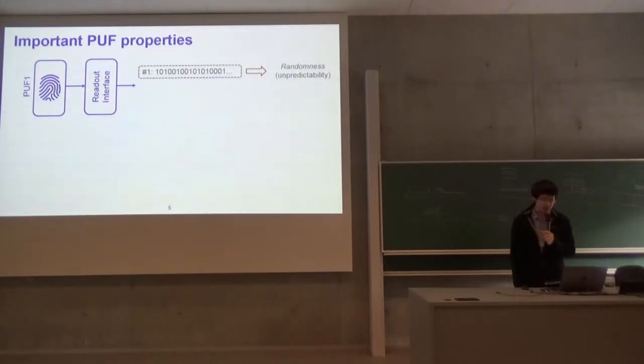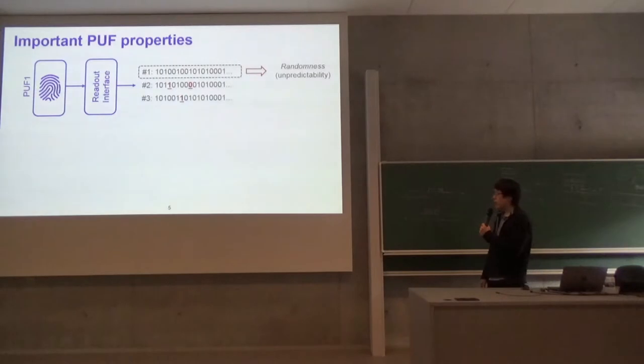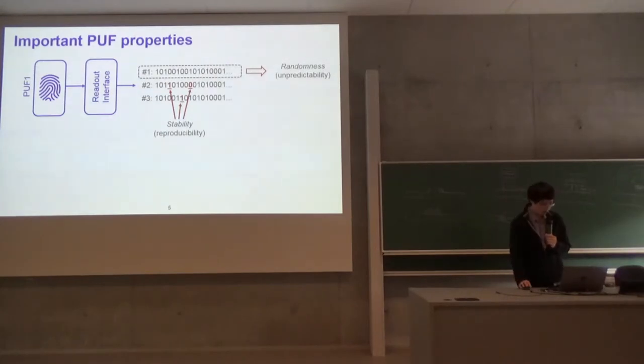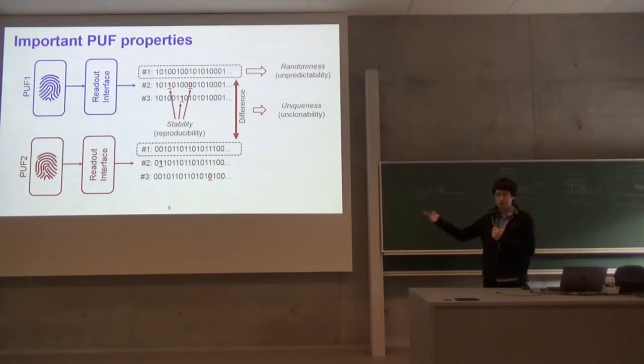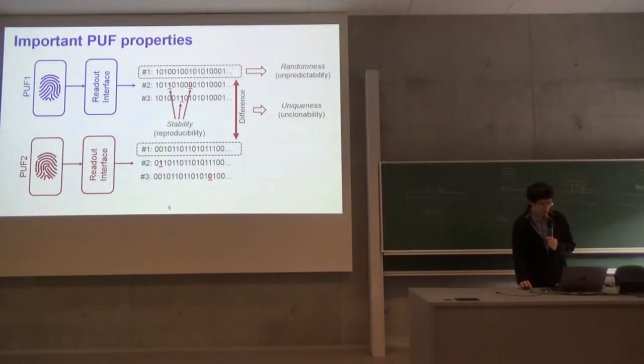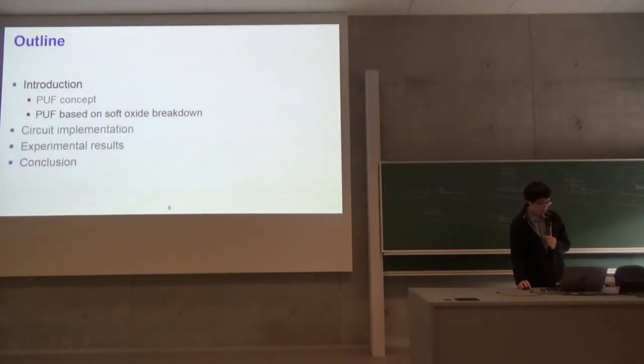What are good PUF properties? We have the PUF and readout interface, and we read out the data. What's important is that this data needs to be random, meaning it cannot be predicted. If there's a bias, like more ones than zeros, it's easier to predict. If we read multiple times, it introduces errors, treated as stability. For another PUF with the same circuit, we want different responses, which we call uniqueness. Stability is our main focus because our goal is to avoid post-processing.